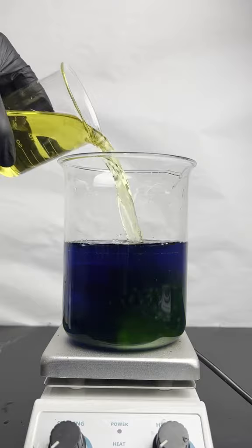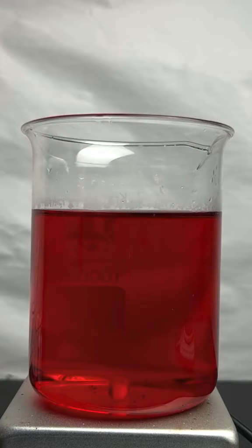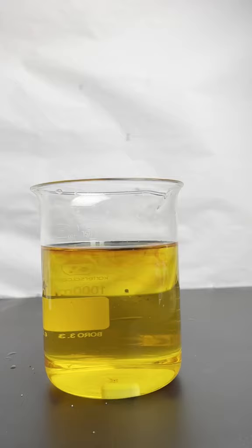Because when you add a solution of glucose and sodium hydroxide, it does this. The indigo carmine is reduced into a red intermediate, and then it is further reduced to this piss color.